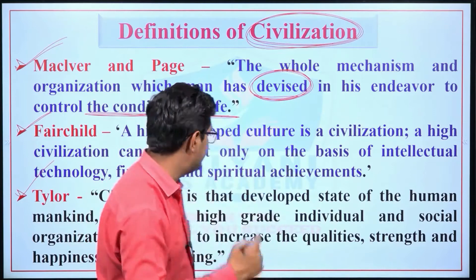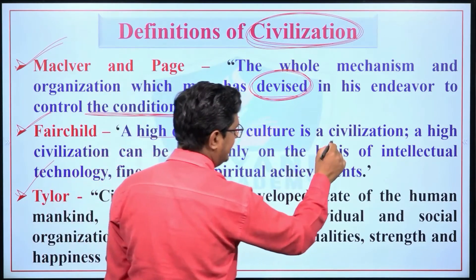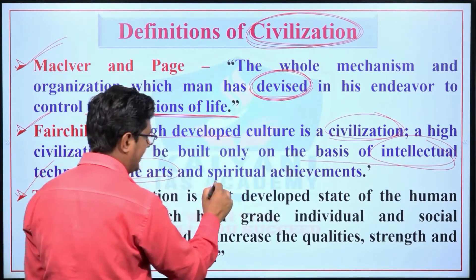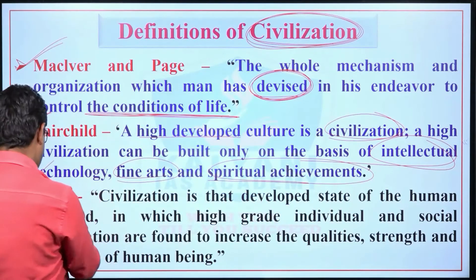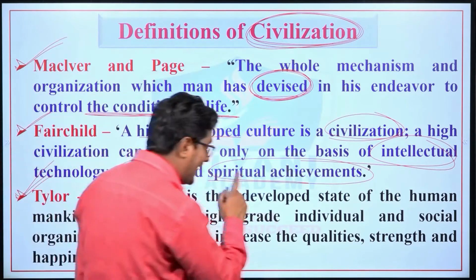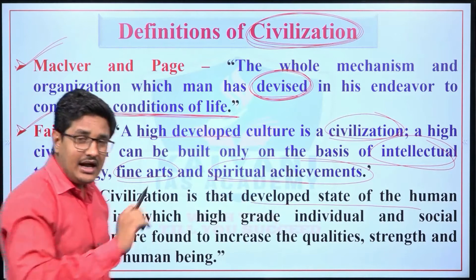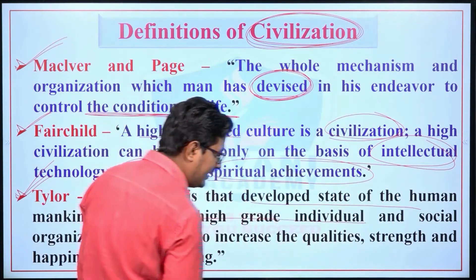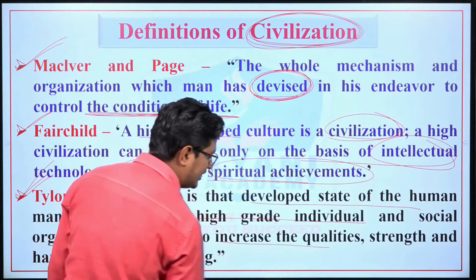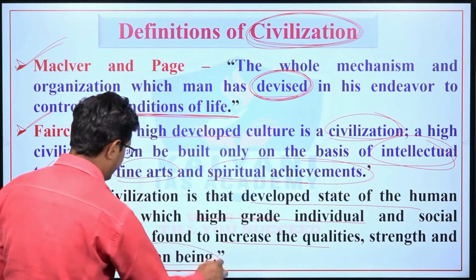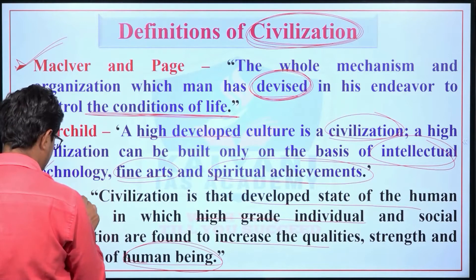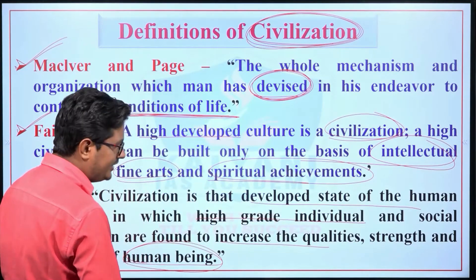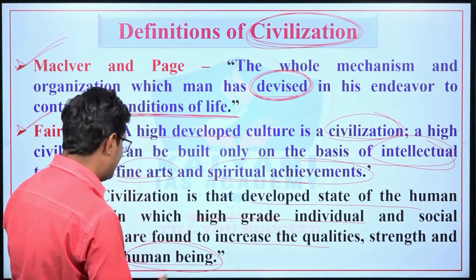According to Fairchild, a highly developed culture is civilization, and a high civilization can be built only on the basis of intellectual technology, fine arts, and spiritual achievements. According to Taylor, civilization is that developed state of humankind in which high-grade individual and social organization are found to increase the qualities, strength, and happiness of human beings.